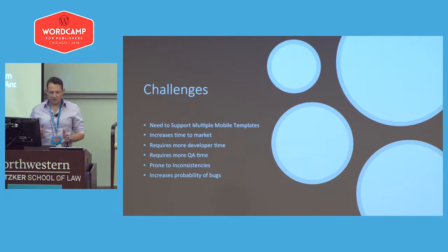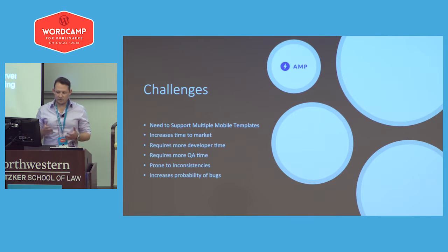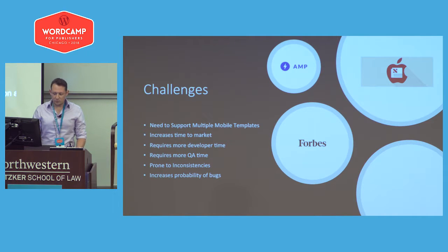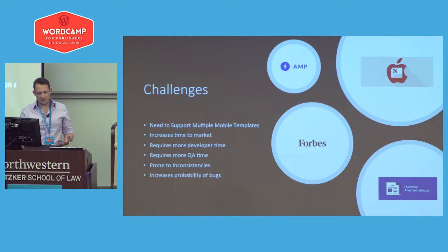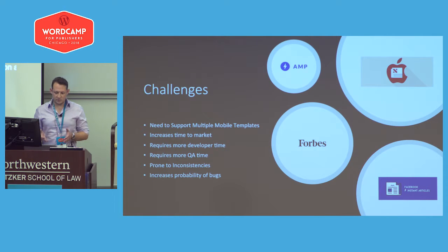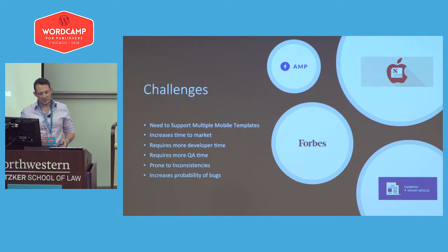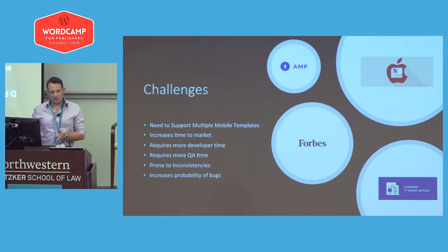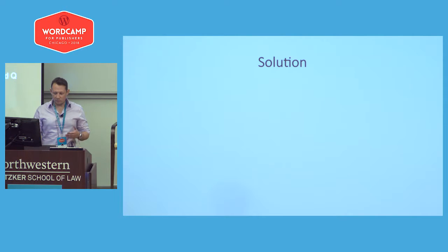What challenges are we facing with our mobile templates? We have a lot of them, and we surface them on many different platforms: AMP, Apple News, Forbes Canonical templates, and Facebook Instant Articles. Supporting that many platforms introduces problems — it increases time to market, requires more developer and QA time, creates potential for inconsistencies between templates, and increases the probability of bugs.